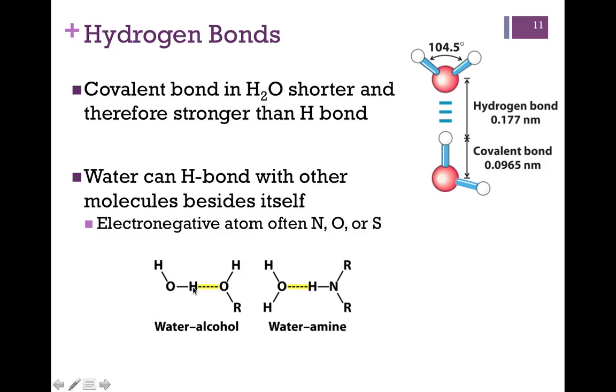So, in each case, we have a hydrogen atom between two electronegative elements. The figure on the left is hydrogen between two oxygens. On the right, hydrogen between oxygen and nitrogen.